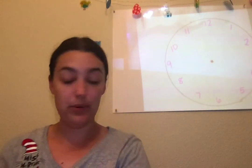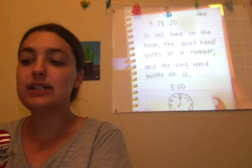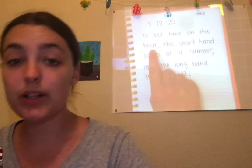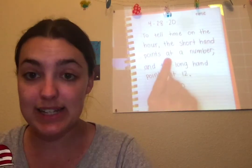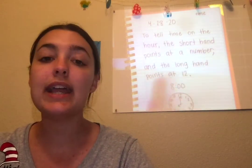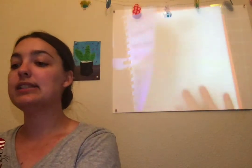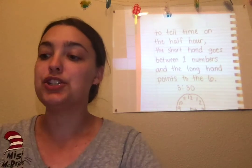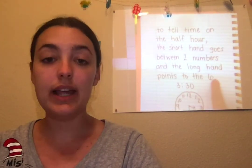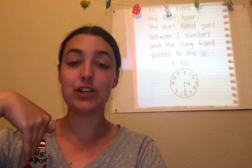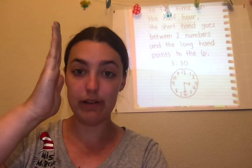So there are some examples of how we tell time to the hour and to the half hour. Let me read over our notes one more time. To tell time on the hour — 1 o'clock, 2 o'clock, 3 o'clock, 4 o'clock — the shorthand points to that number, and the longhand always points at 12. To tell time on the half hour, the shorthand goes in between two numbers, and the longhand always points to the 6. Half hour points to the 6, on the hour points to the 12.